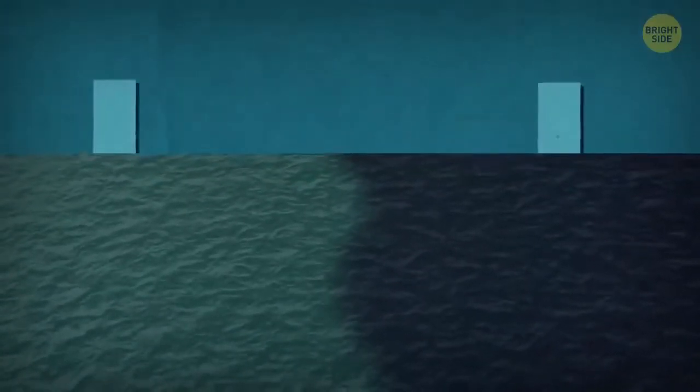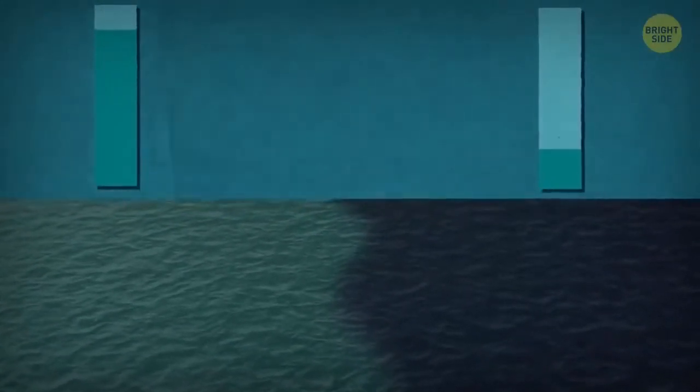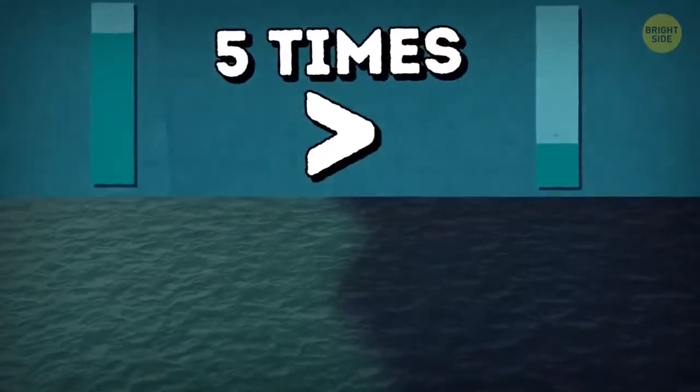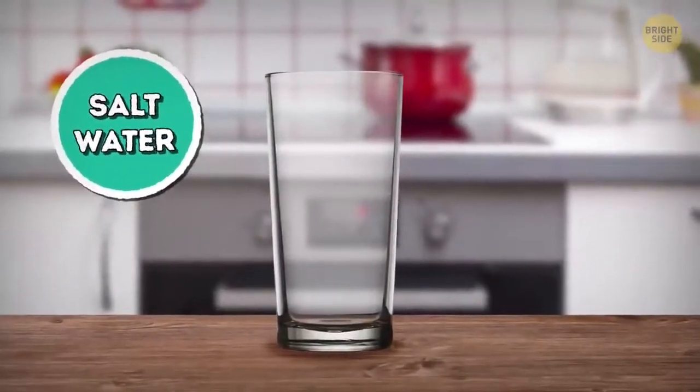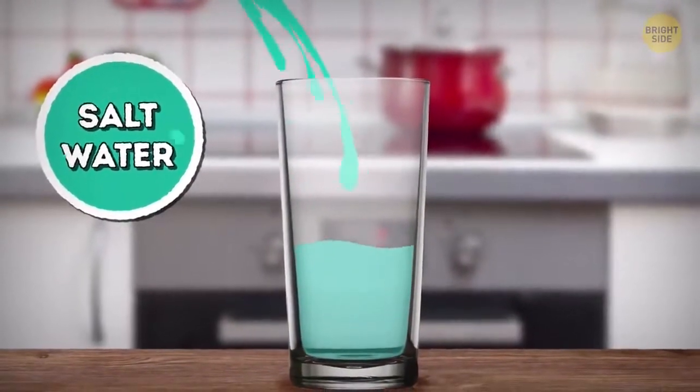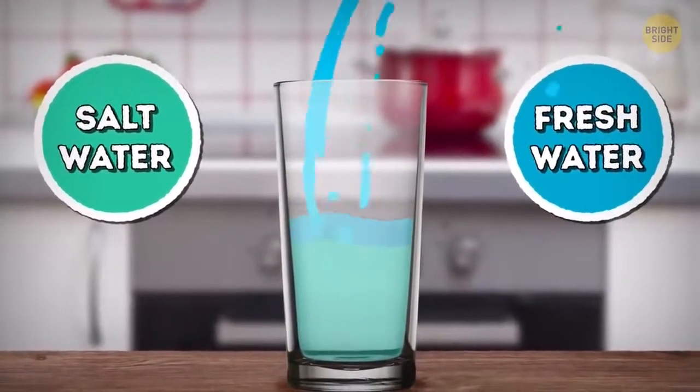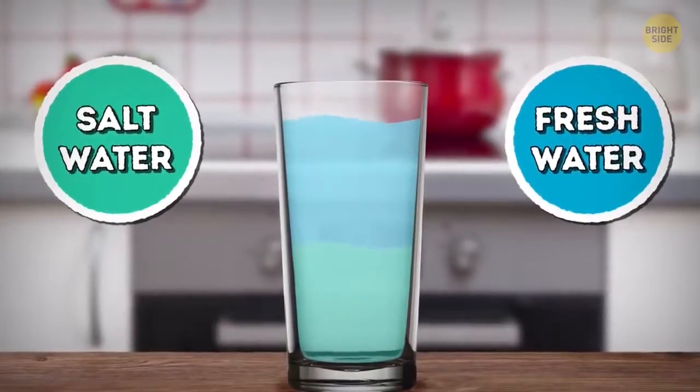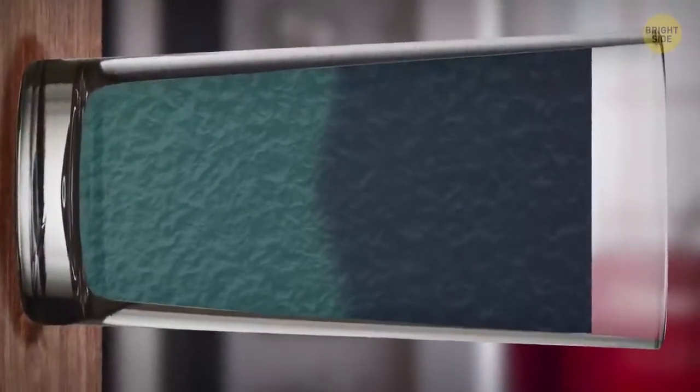Haloclines appear when the water in one ocean or sea is at least five times saltier than in the other. You can create a halocline at home if you pour some seawater or colored salty water in a glass, and then add some fresh water on top of it. The only difference is that your halocline will be horizontal, and ocean haloclines are vertical.